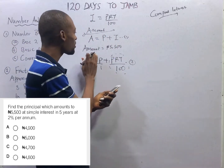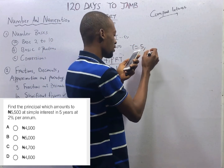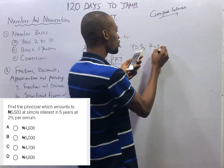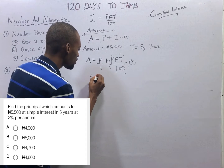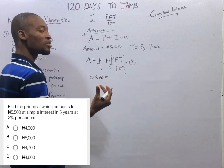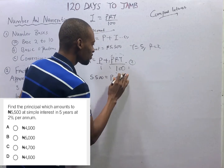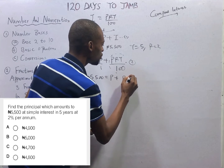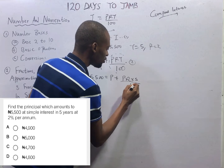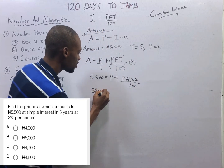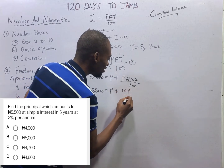So from this question, amount is N5,500, time equals 5, rate equals 2. Substituting into the formula: 5,500 = P + (P × 2 × 5 / 100). This gives us 5,500 = P + 10P/100.